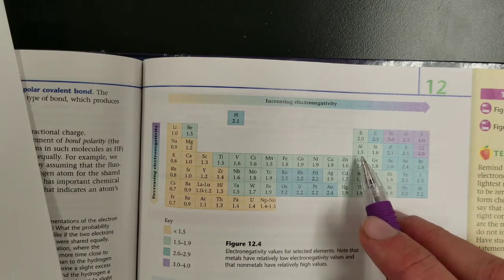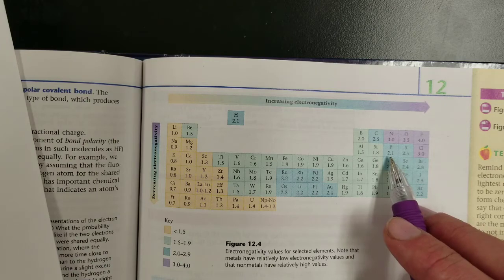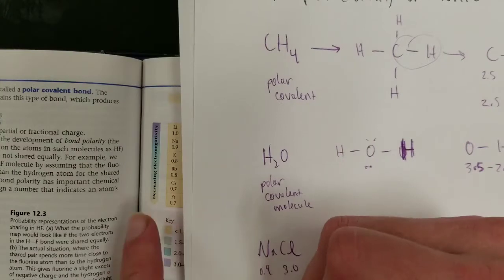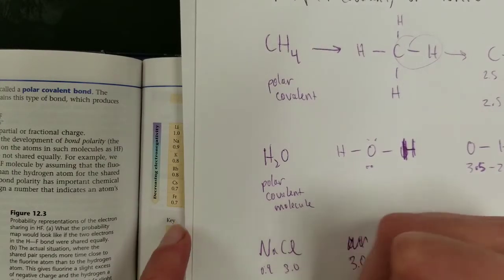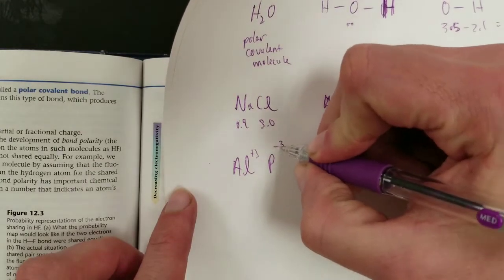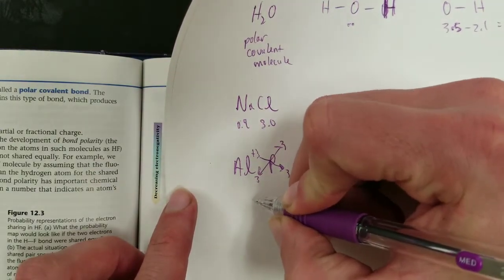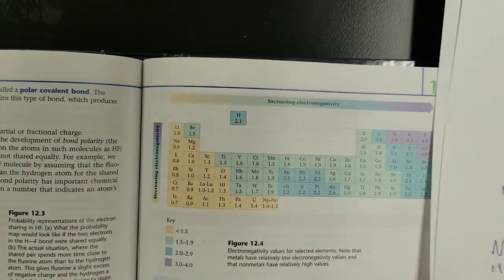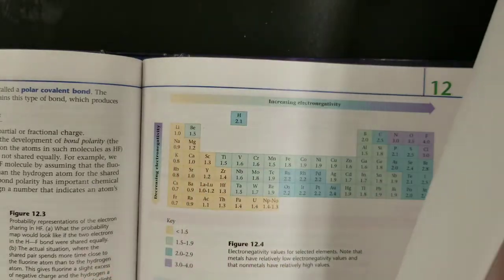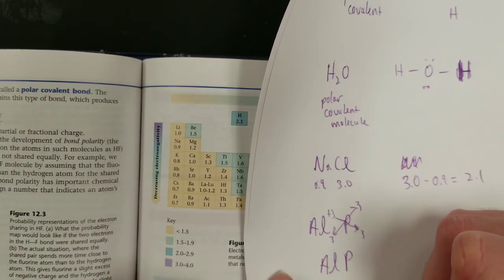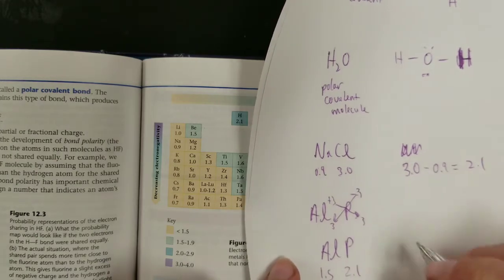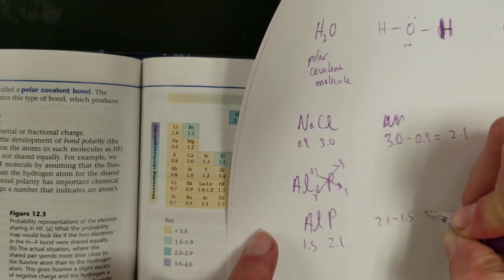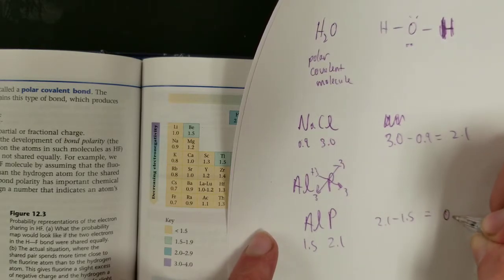Let's see. Aluminum is a metal. Phosphorus is a nonmetal. So, aluminum phosphide. Let's see. Aluminum is plus 3. Phosphide is a minus 3. So, 3, 3. That reduces to one of each. Aluminum phosphide. Aluminum has a value of 1.5. Phosphorus is 2.1. That's the electronegativity value. So, 2.1 minus 1.5 is 0.6.